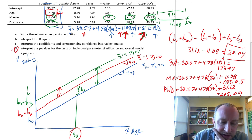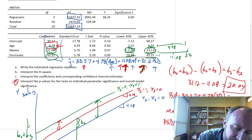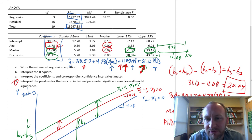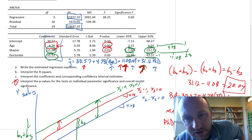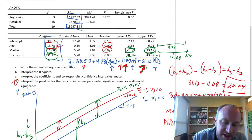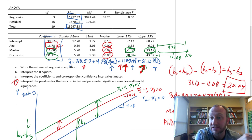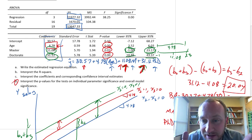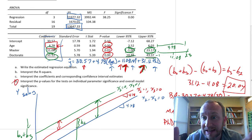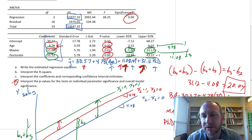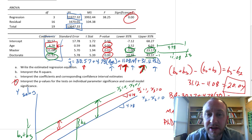For part d, interpret the p-values. Age is statistically significant. Master's degree, as we already confirmed looking at our confidence intervals, is not statistically significant. But getting a doctorate is statistically significant — all relative to a bachelor's degree. So a master's degree does not show a statistically significant difference in income relative to a bachelor's, but a doctorate does. The p-value for the overall model is zero, so the model is definitely statistically significant overall.